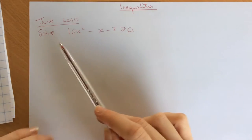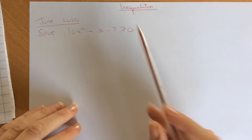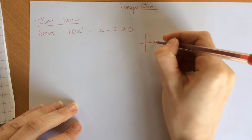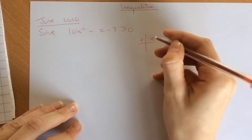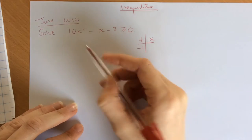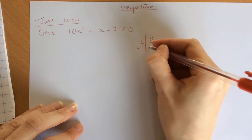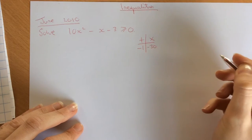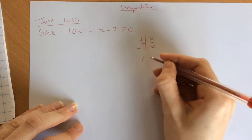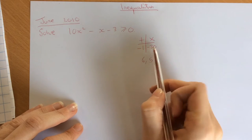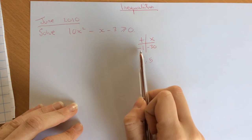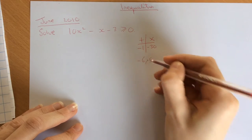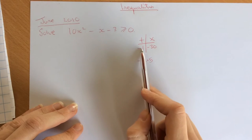The first thing you need to do with a quadratic like this is factorize it. So using our method: what do we add to make minus 1, and what do we times to make 10 times minus 3, which is minus 30? We're going to use 6 and 5 to make 30, so we'll have minus 6 and plus 5 to make minus 1.